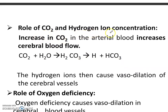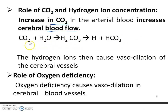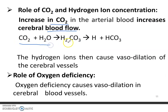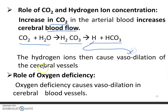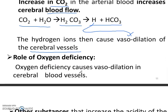The role of CO2 and hydrogen ion concentration: increasing CO2 in the arterial blood increases the cerebral blood flow. CO2 plus water makes H2CO3, which then dissociates into H+ and HCO3−. This hydrogen ion causes vasodilation of the cerebral blood vessels. And when there is oxygen deficiency, oxygen deficiency also causes vasodilation in the cerebral blood vessels.